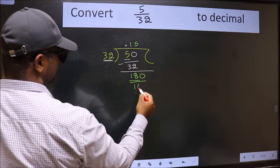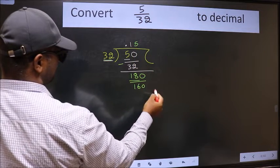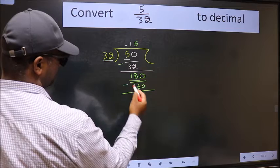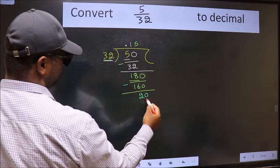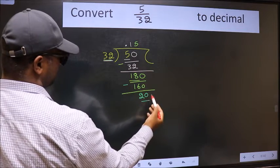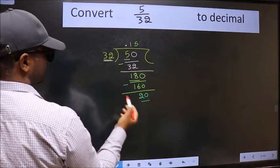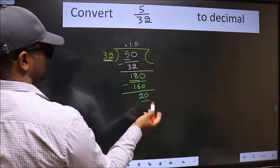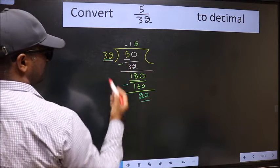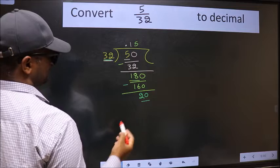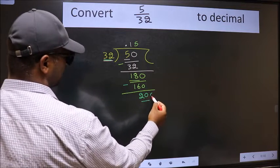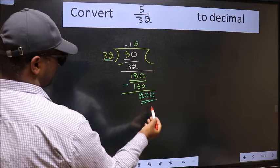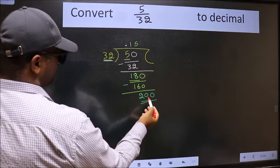We subtract to get 20. Now we have 20 and 32. Since 20 is smaller than 32 and we already have the decimal, we directly take a 0, making 200. A number close to 200 in the 32 times table is 32 × 6 = 192.